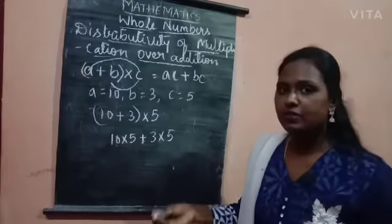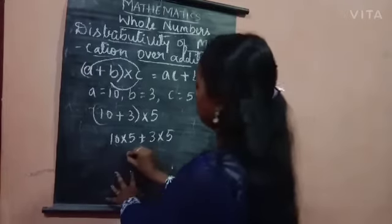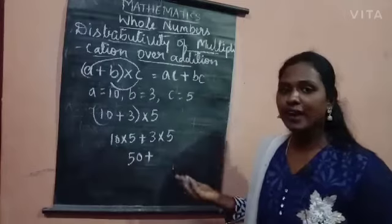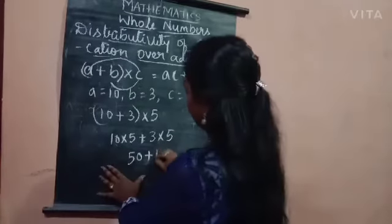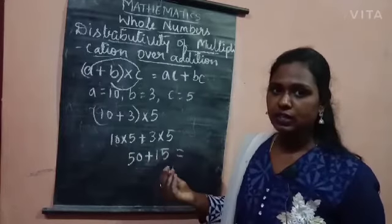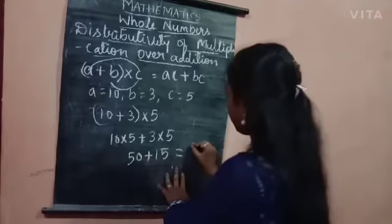10 into 5 is how much? It is 50 plus 3 into 5, it is 15. If you add 50 plus 15, the answer is 65.